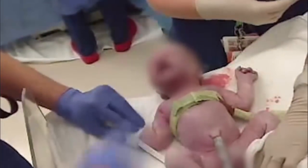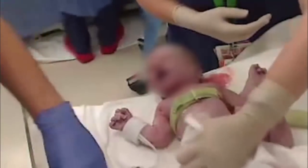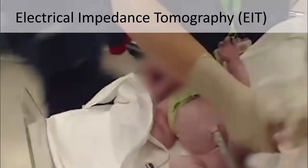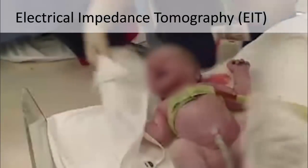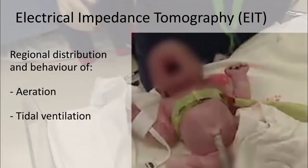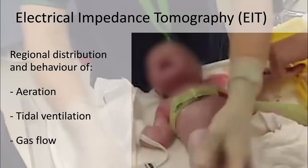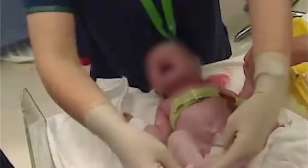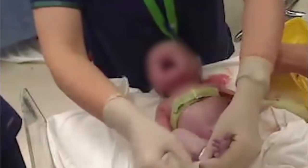We imaged healthy term neonates born by elective caesarean section from their very first breath after birth using electrical impedance tomography or EIT. EIT allows the real-time visualization of the regional distribution and behavior of aeration, tidal ventilation and gas flow within the chest. EIT is ideally suited to neonates as it is non-invasive and radiation free.